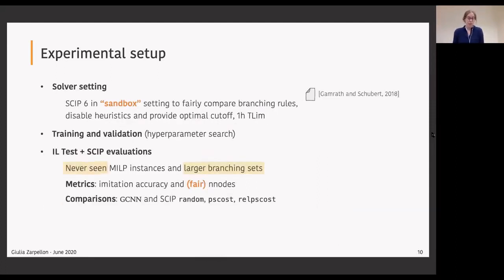As far as the solver setting goes, we work with SCIP 6 in a sandbox setting which is precisely designed to fairly compare branching rules. In this setting we disable primal heuristics and provide an optimal cutoff. There's also a phase of training and validation of our deep neural network models. Then finally, the policies that we obtain are tested. The test happens on never seen MILP instances, on totally new branching sets, totally new inputs, and also on larger branching sets.